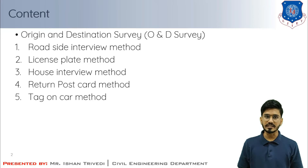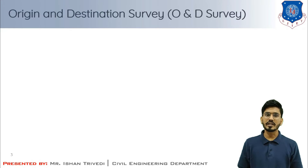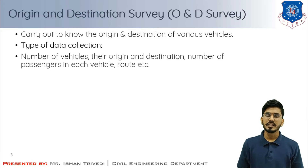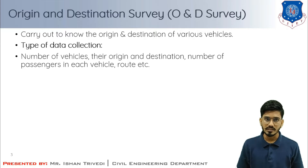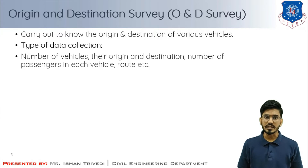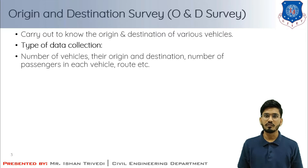Let us first understand what is origin and destination survey. The origin and destination study is carried out mainly to know the origin and destination of various vehicles, whether they start from home going to the workplace, school, or any other place. The data collected includes the number of vehicles, their origin and destination, where they started from, the time, the number of passengers in each vehicle, and their route.